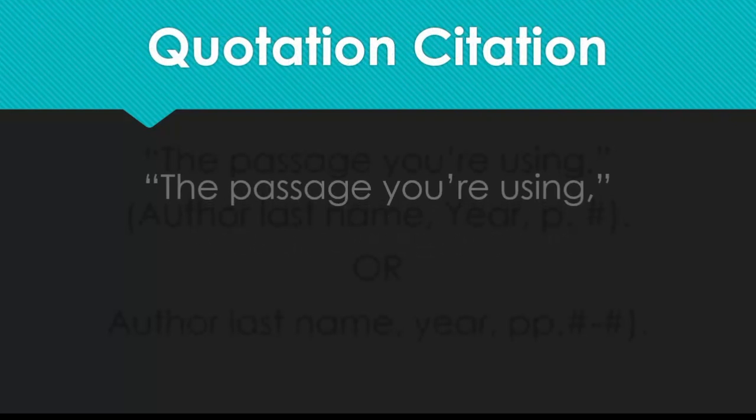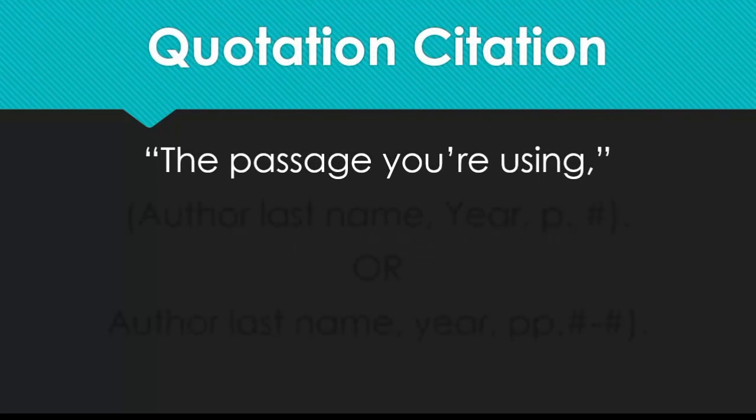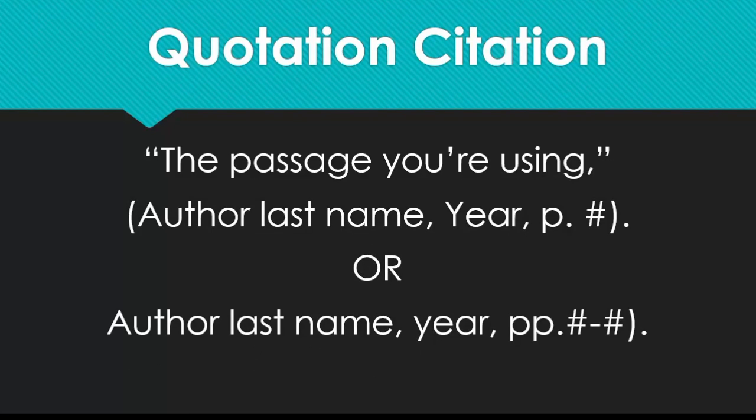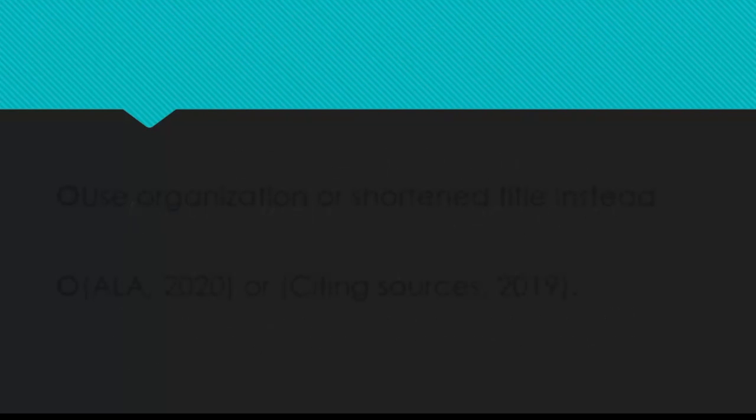If you're quoting another source, you should show that with quotation marks around the borrowed passage and your in-text citation will have three pieces: the author's last name, the year of publication, and the page number the quote appears on in the original source. If it's a quote from one page, it looks like this: p.number. If the quote spans multiple pages, you get multiple p's: pp.number through number.